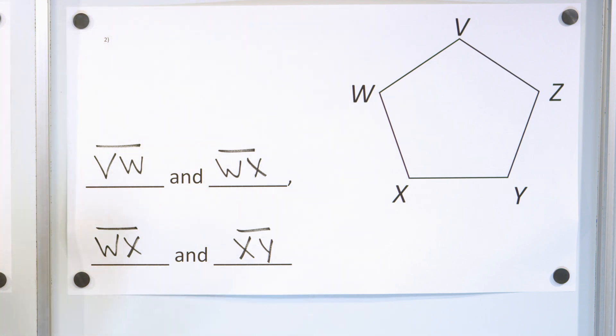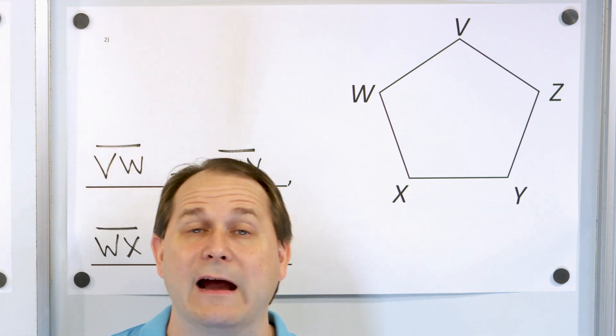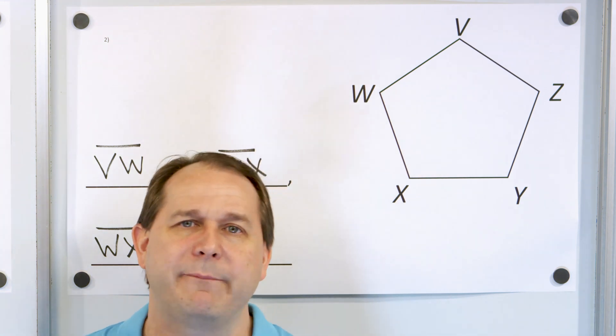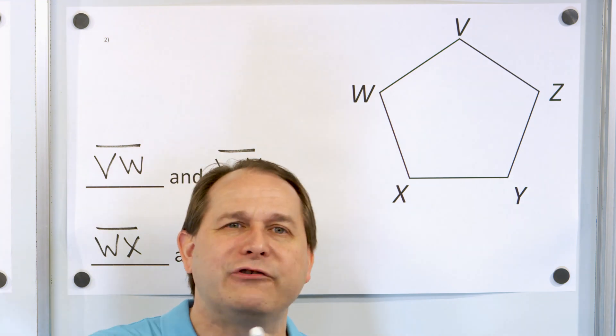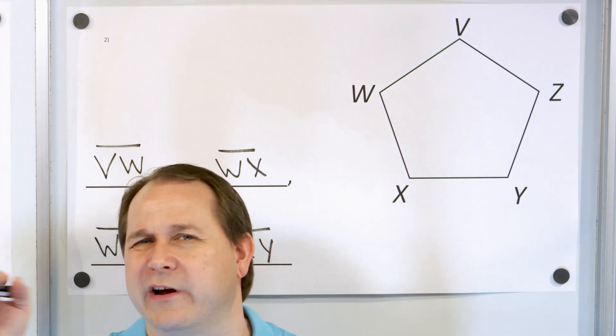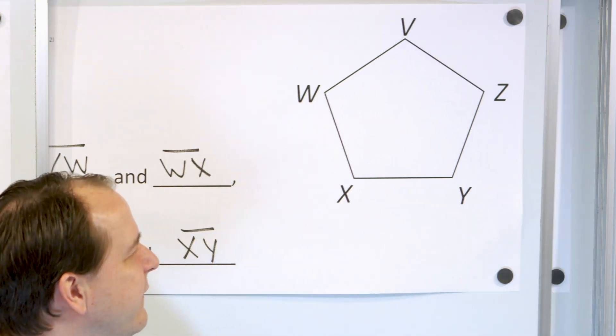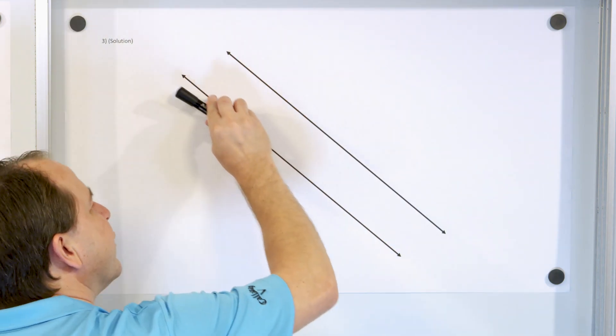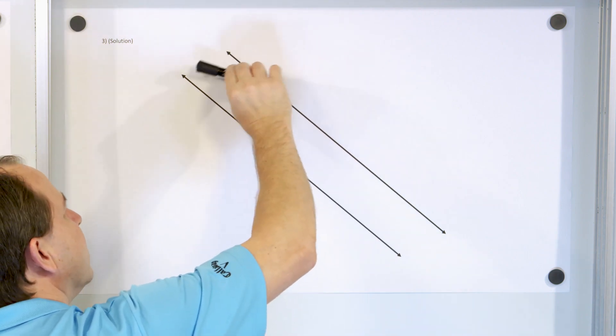The next problem just simply says, draw a pair of parallel lines. Remember, a pair of parallel lines are just two lines that never ever cross. If I try to draw it by hand, they'll be crooked. So here is a pair of parallel lines. They never ever cross, because they're going in a straight line, but they're never crossing anywhere.